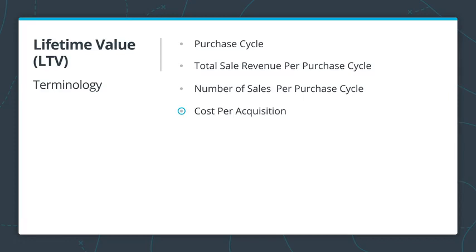Next, we have expected retention time. This is the amount of time you expect to retain the customer, measured in terms of purchase cycles. So if we expect a customer to be retained for a year given a two-week purchase cycle, then we have an ERT of about 26.